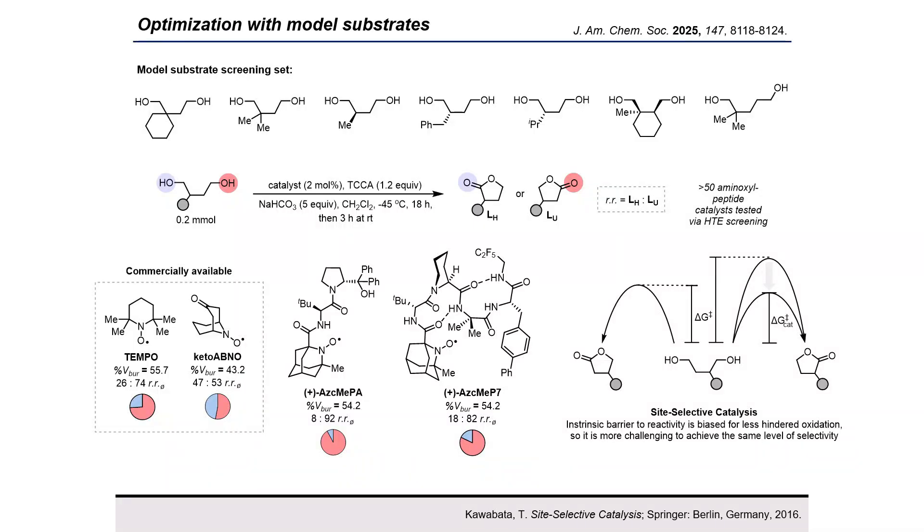We reasoned that in this case, the methyl group adjacent to the active site of our catalyst was sterically clashing with our substrates, and hypothesized that maybe we could alleviate this bias by designing a new catalyst core which was sterically accessible, similar to ketoABNO, to overcome substrate control and allow for catalyst control by the peptide.